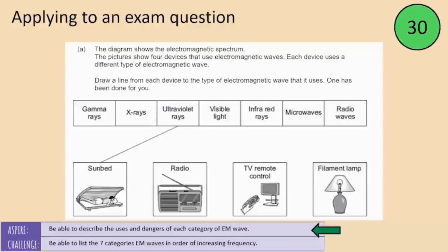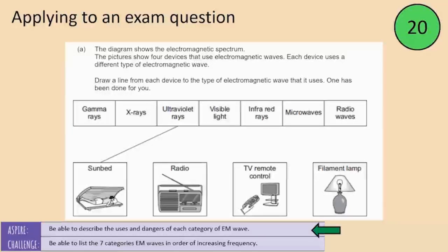Let's apply this. I'd like you to read this exam question and figure out what you have to do. I'm going to give you 30 seconds. When the 30 seconds run out I'll show you what your answer should look like. Look for a command word — a word that tells you to do something — put a box around it, and that will tell you what to do.